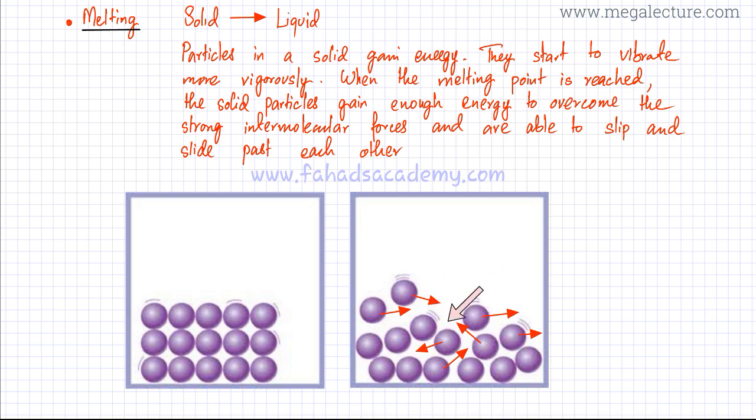This is the liquid state. In the liquid state, the particles can slide past each other and move around, but they can't move around freely in all directions. A particle cannot jump and move anywhere it wants—they can only slide past each other.